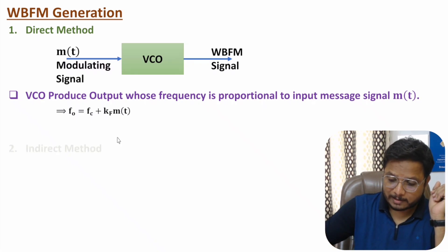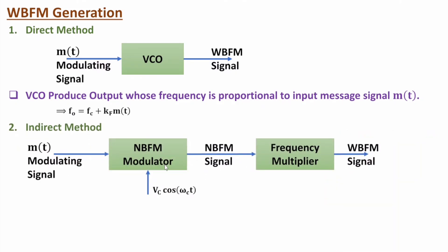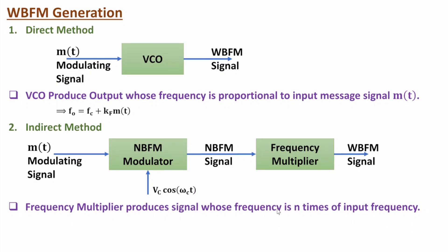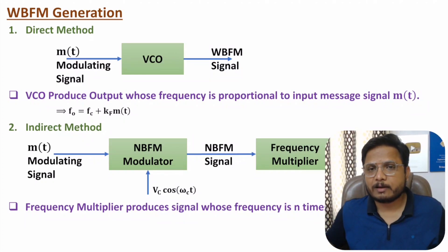In the indirect method, we use an NBFM modulator. As discussed in my last video, the NBFM — narrowband frequency modulator — takes two inputs: the message signal and the carrier, and generates a narrowband frequency modulated signal. This NBFM signal is then given to a frequency multiplier. The frequency multiplier multiplies the frequency of the input signal by n. Multiplying by n increases the frequency and bandwidth by n, generating a wideband FM signal.